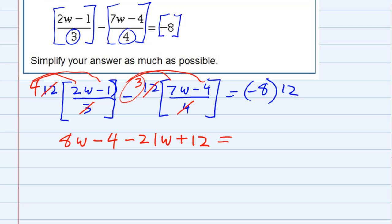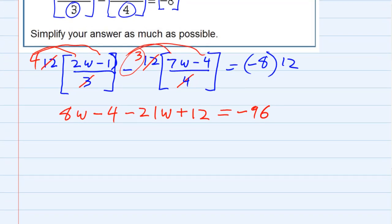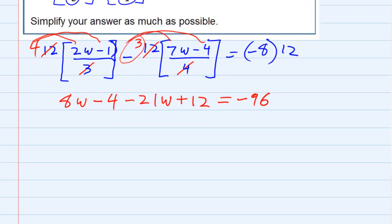And then, on the right-hand side, I just have the minus 8 times 12, so minus 96. Okay, so, no more parenthesis, no more fractions. I'm ready to combine like terms and start solving this thing.